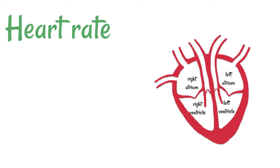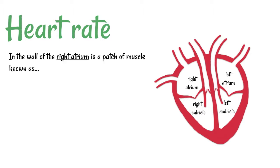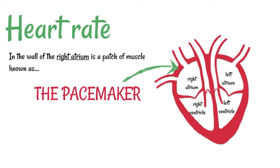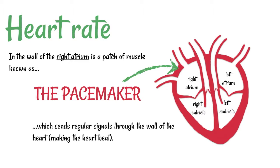The heart rate is determined by a little thing in the wall of the right atrium. There's this little patch of muscle known as the pacemaker, and the pacemaker sends signals through the wall of the heart, making the whole thing beat.